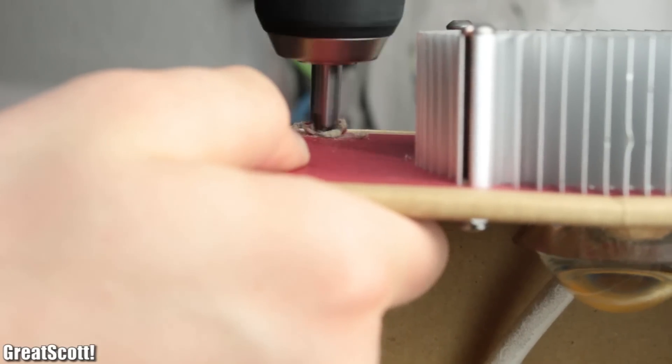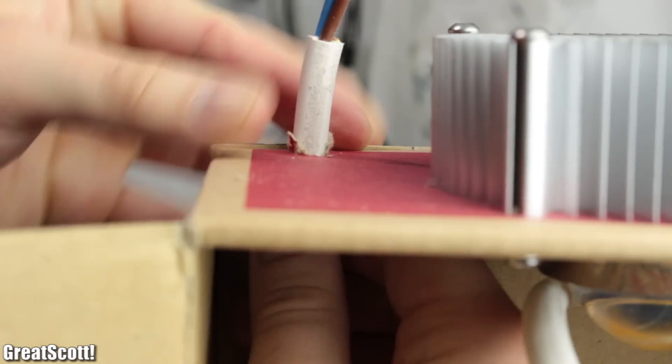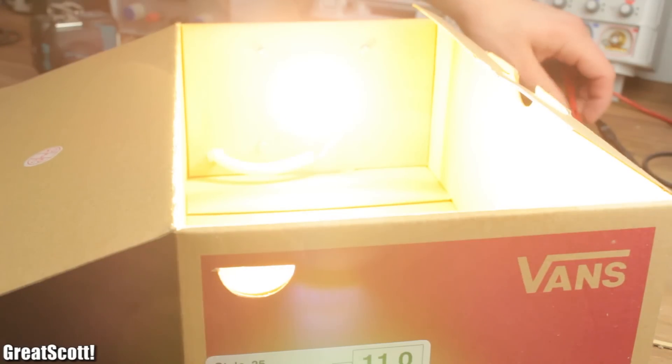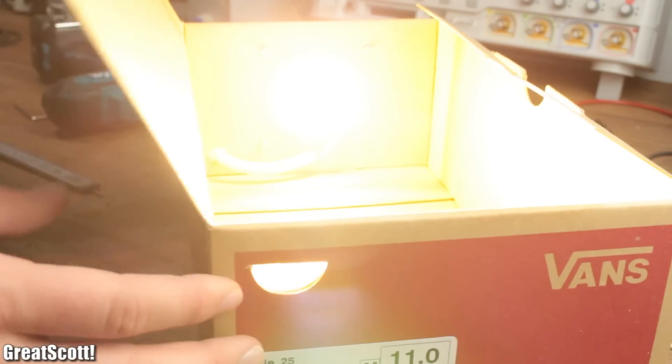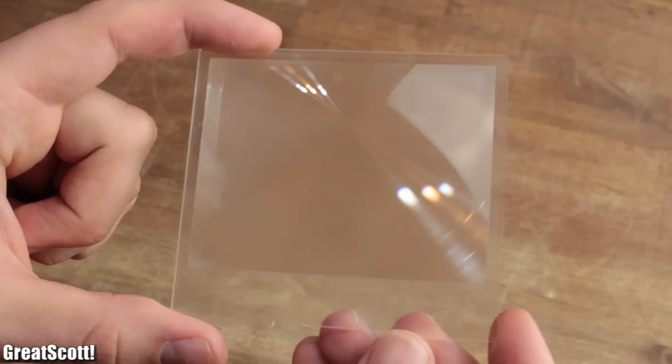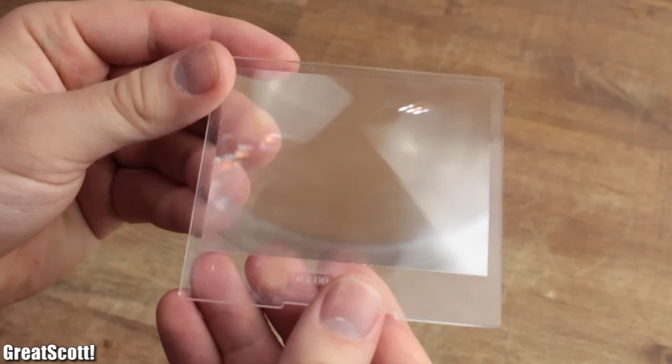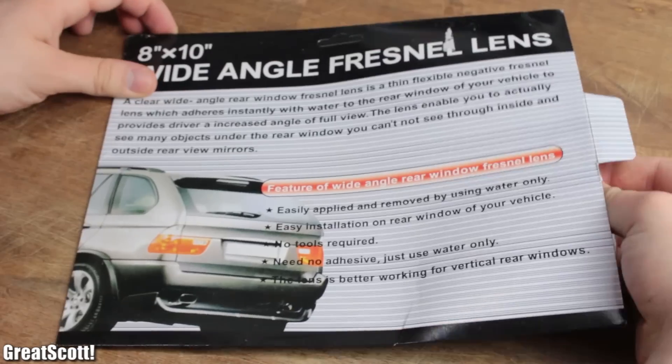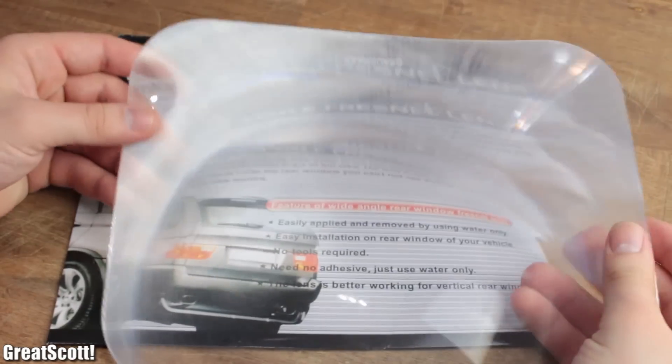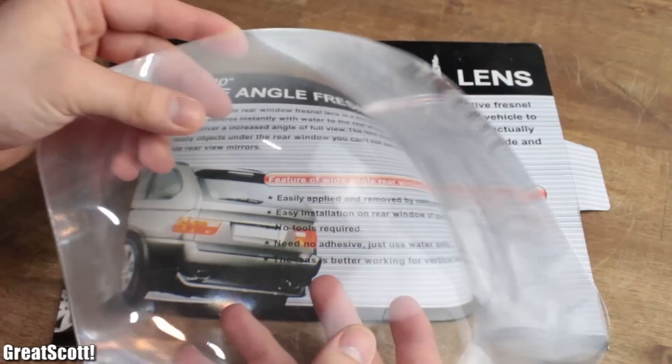I also drilled an 8mm hole in order to get the LED wires out of the box right before I did a test run and moved on to the Fresnel lens. The one I salvaged earlier is a bit too small, so I had to get a bigger one, in this case a Fresnel lens which is normally used with cars to get a better angle of view.